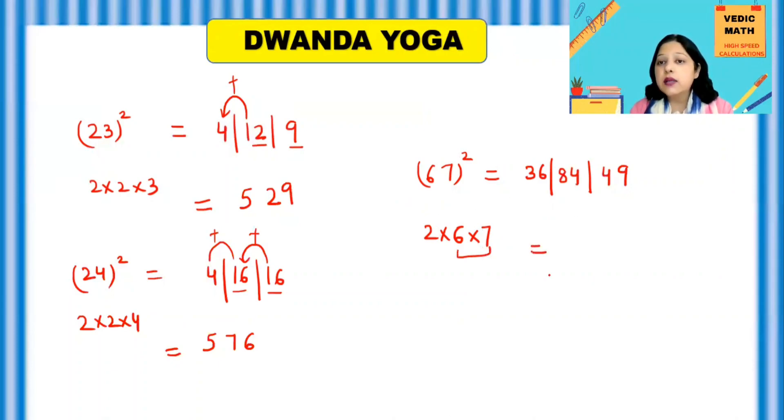So write down the answer. Now here 9 will be as it is. 4 plus 4 will be 8. And then 8 is extra. So shift 8 to this side. And 36 plus 8 is your 40.